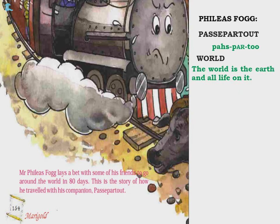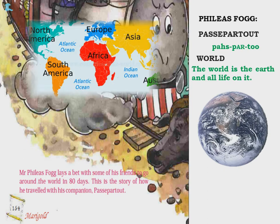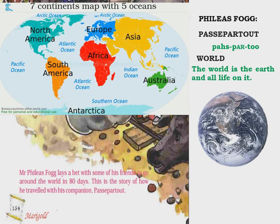The world is the earth and all life on it — human beings, animals, plants, trees, everything. There are seven continents: North America, South America, Europe, Africa, Asia, Australia, and Antarctica. There are five oceans: Pacific, Arctic, Atlantic, Indian, and Pacific Oceans. Each continent has different countries — for example, India is in Asia. The two main characters in this lesson are Phileas Fogg and Passepartout.